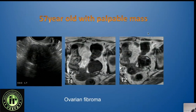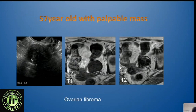Here is a good example: a 57-year-old woman with a palpable mass. The lesion is very hypoechoic with some acoustic shadowing — it looks like a fibroid except it is in the ovary, making ovarian fibroma a strong possibility, which is a benign lesion. You want to confirm on MRI: it should be T1 dark and T2 dark, just like fibroids. Diffusion imaging and contrast enhancement will further confirm the diagnosis of ovarian fibroma.